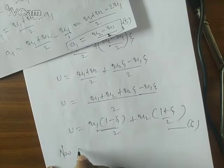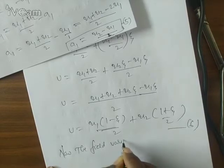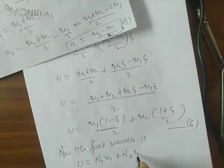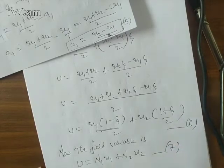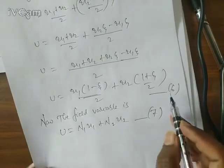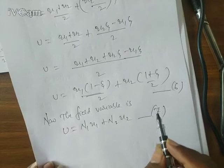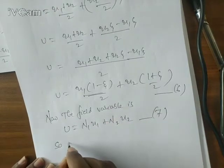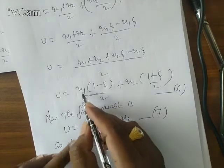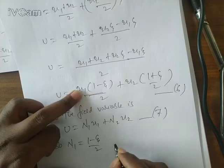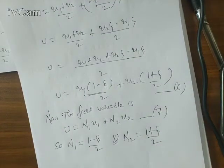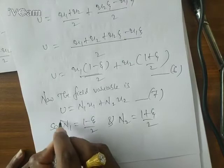The field variable is u = N1·u1 + N2·u2 — call this Equation 7. Comparing Equation 6 and Equation 7, we can identify the shape functions: N1 = (1 - ζ) / 2 and N2 = (1 + ζ) / 2. Thus we have successfully derived the shape functions for the 1D bar element.